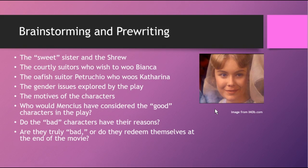Then there is the oafish suitor Petruchio, played with lots of zest and zeal by Richard Burton. I love the scene at the beginning when we meet him and he has a big hole in his sock, which pretty much illustrates his entire character at the time. Petruchio goes to woo Katharina as a way to marry a rich woman and make his life easier. The gender issues explored by the play and the motives of the characters are something I'd want to write about — Petruchio wants money, and Katharina has been told she could never have a husband.